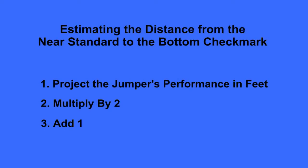As a general guideline, estimate your jumper's predicted best performance in feet. Then, multiply the predicted performance by two and add a foot. This will give you a good, safe starting point.